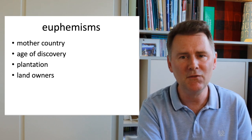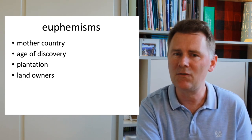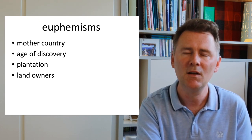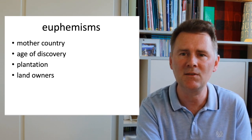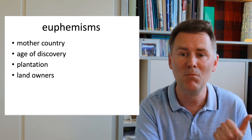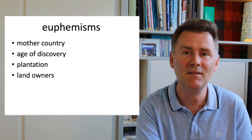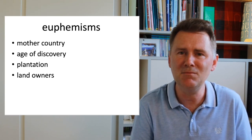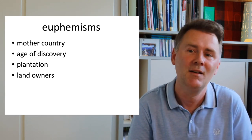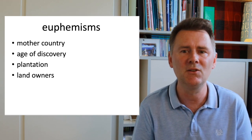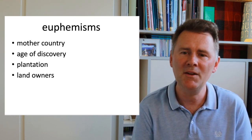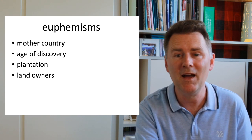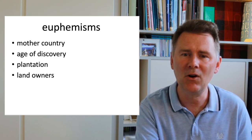One aspect that makes it difficult to talk about colonialism is that many of the terms used are euphemisms, coined to present colonialism in positive terms. I've put four examples on the slide: mother country, age of discovery, plantation, and landowners. On the surface these words may seem innocent. I'd like you to pause and take a brief thinking break: why did I single out these words, what is euphemistic about them, and what would be adequate labels for the notions they describe?